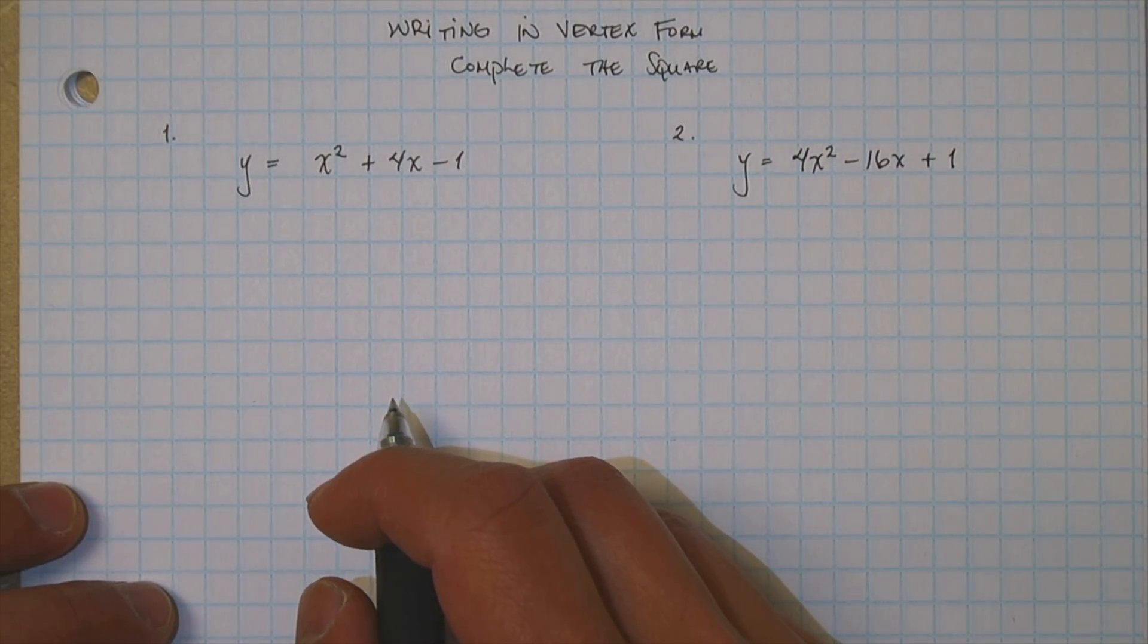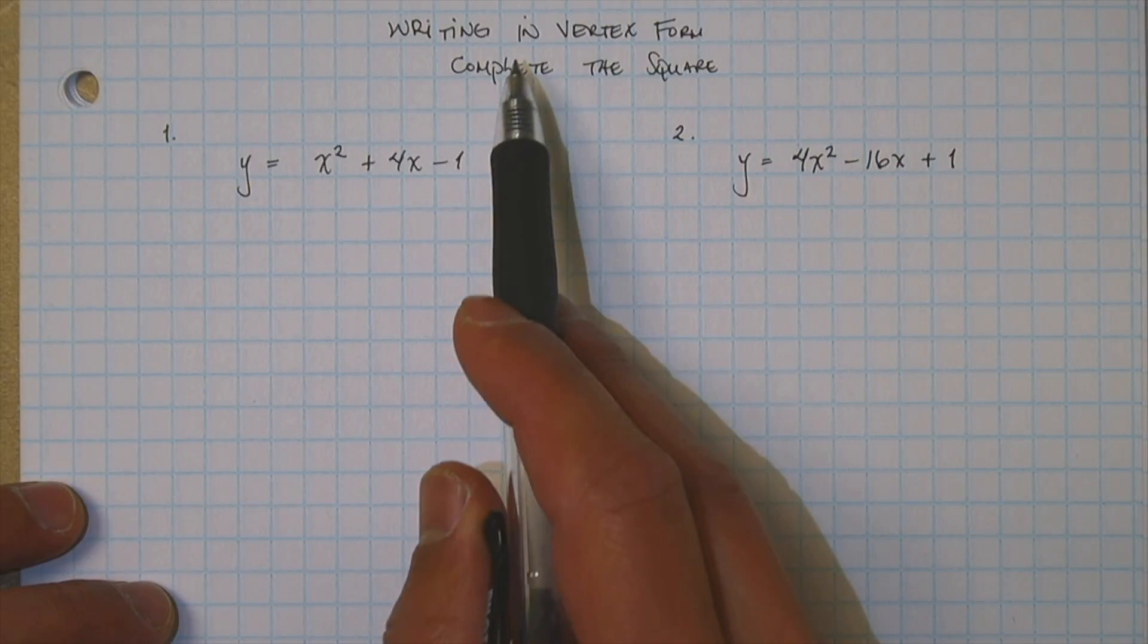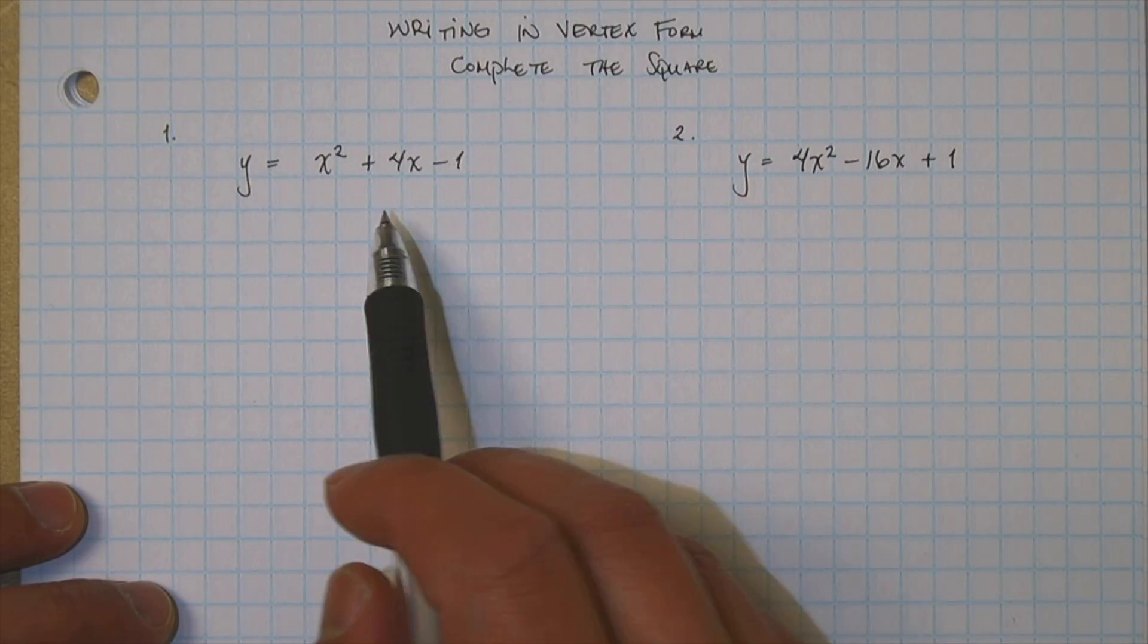Hey guys, welcome back. I want to go ahead and do a couple of problems here on completing the square, writing it in vertex form. So if you notice here I got two examples.